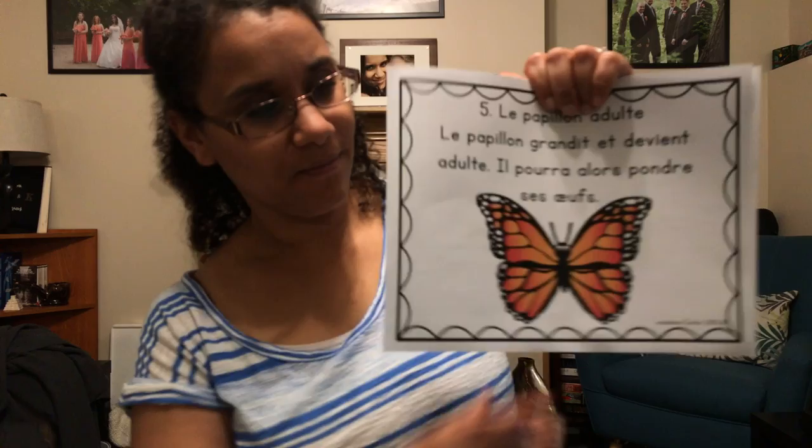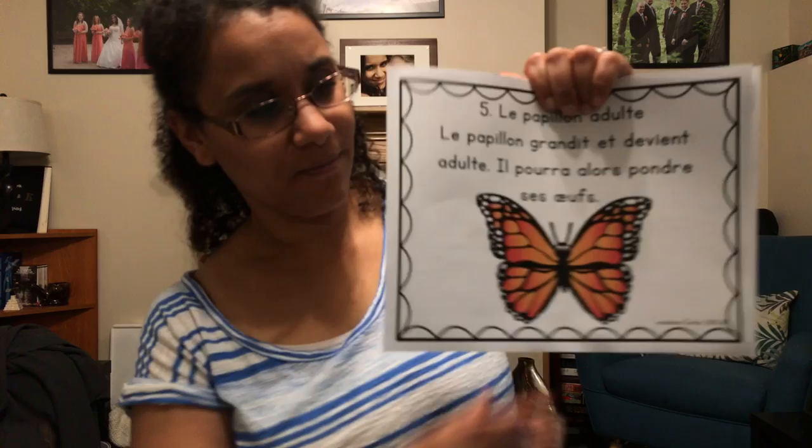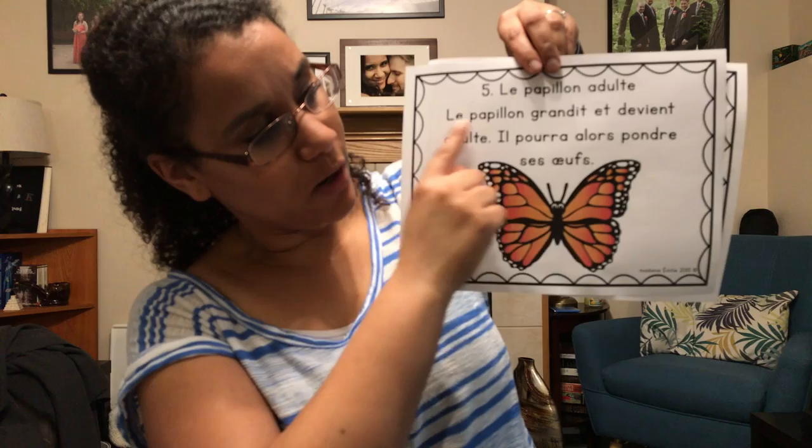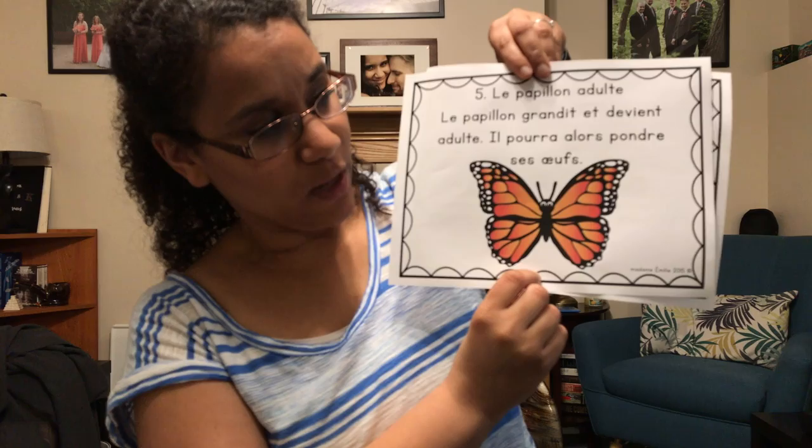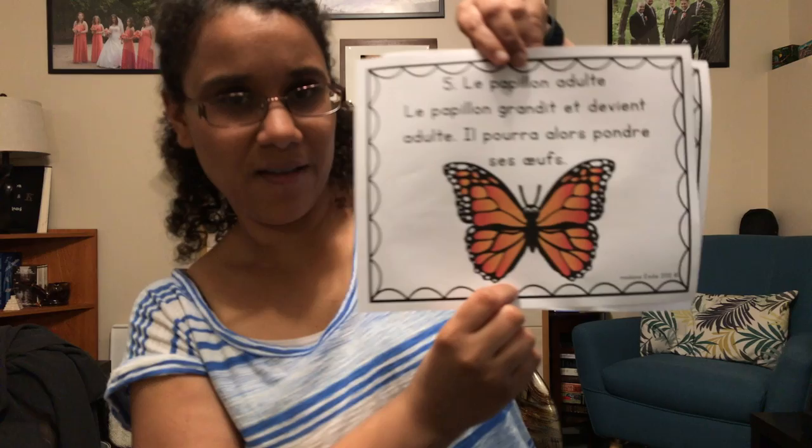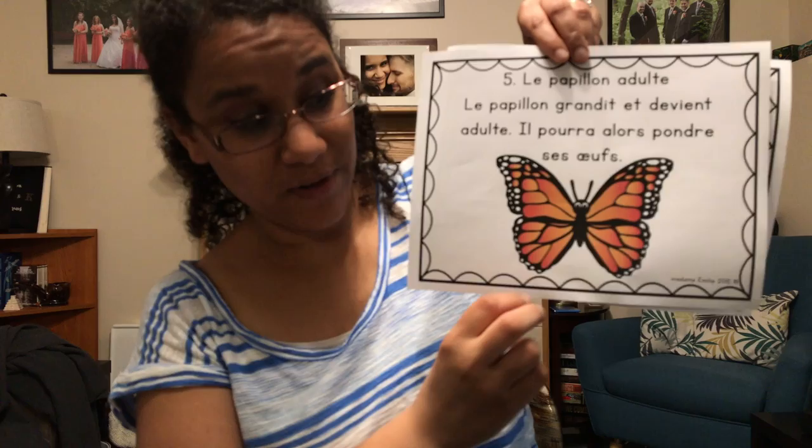Et finalement, regardez. Le papillon avec les grandes ailes — c'est le papillon adulte. Le papillon grandit et devient adulte. Il pourra alors pondre ses œufs. Maintenant, le papillon va trouver une bonne place pour ses œufs. Et après, le cycle commence encore avec les œufs. Donc, c'est l'histoire. C'est la cycle de vie d'une papillon.